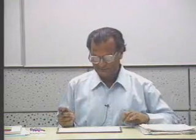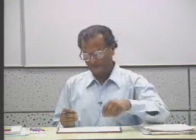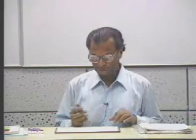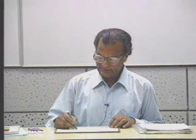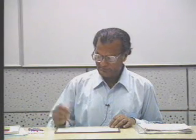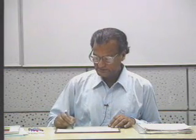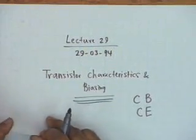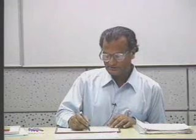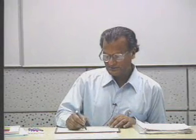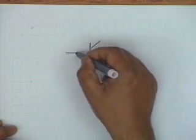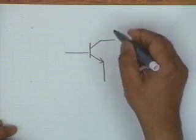This is the 29th lecture and the topic for today is Transistor Characteristics and Biasing. We have already seen the transistor characteristics under the common base connection. We had also briefly discussed the common emitter connection, which we would like to expand on today. In the common emitter connection, it is the emitter terminal which is common between the input and the output.